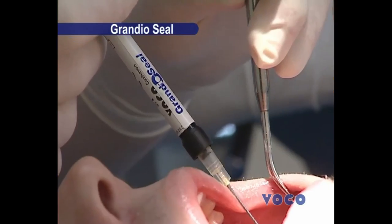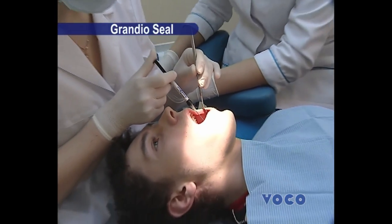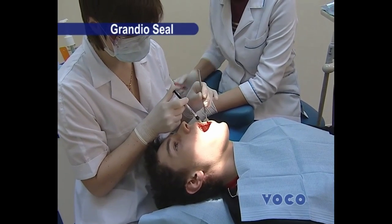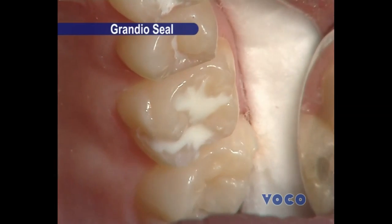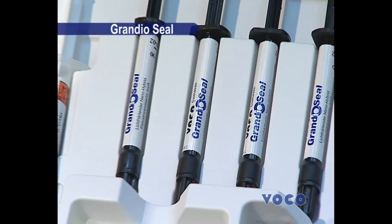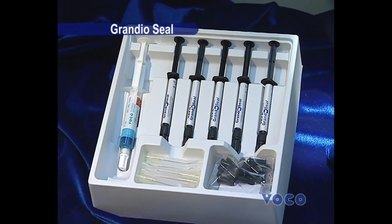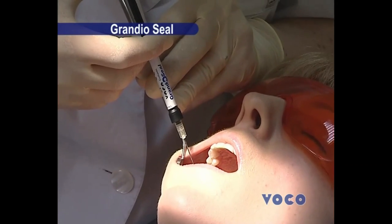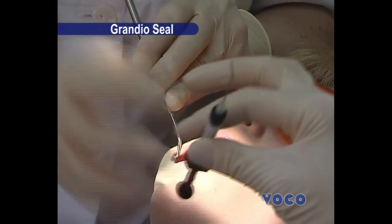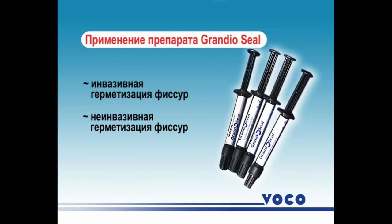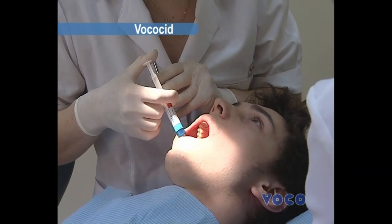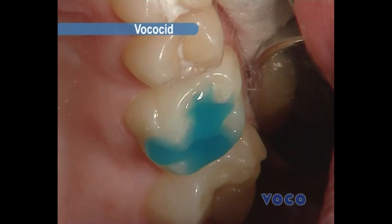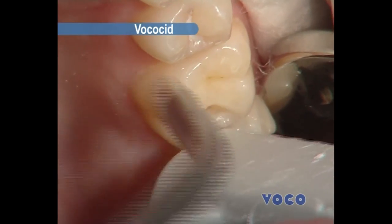To seal tooth 2-6, Grandioseal was used. It has high strength, and therefore it is used in cases of significant preparation of hard tooth tissue, in aerial fissures, at any age. The main requirements for fissure sealants are good fluidity and high strength. Due to nanoparticles, Grandioseal has increased flowability and penetrates well into deep fissures. The material is the most highly filled sealant at about 70% filling. In terms of strength, it is close to composites for chewing teeth, but at the same time has the fluidity of a liquid composite.